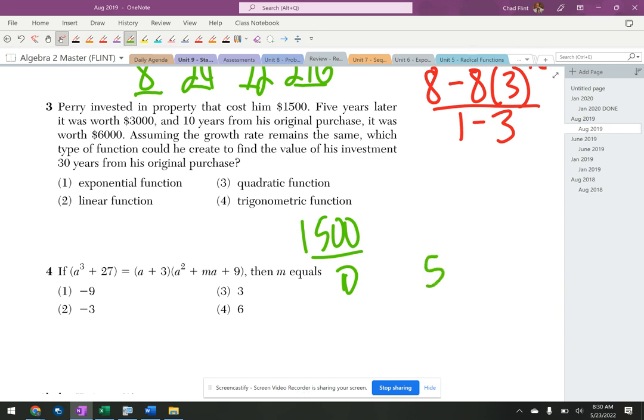And then in year five it's worth $3000, and then in year ten it's worth $6000. So you can see it's doubling each time here. It's gonna be one times two times two.